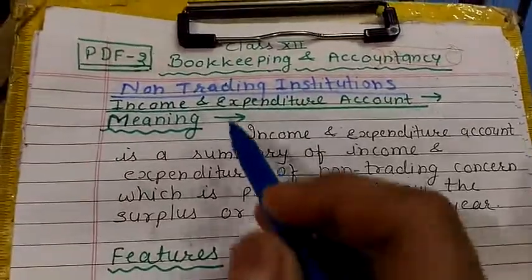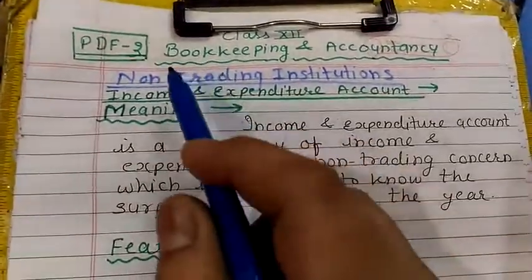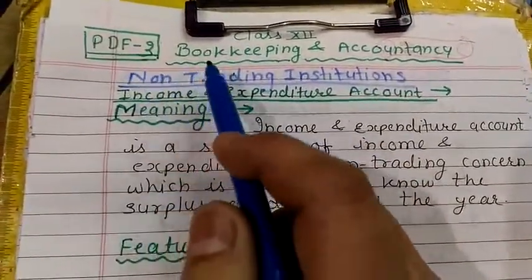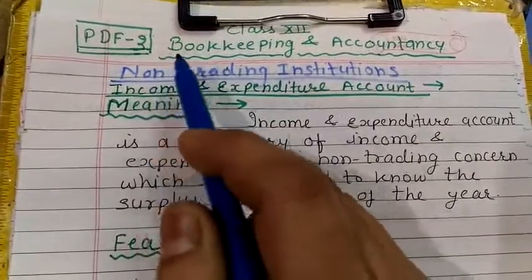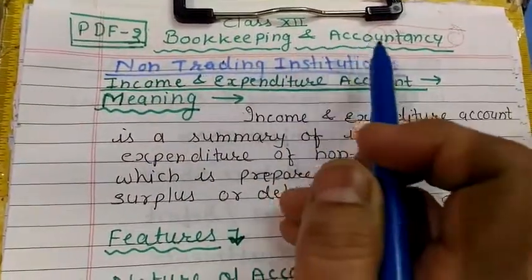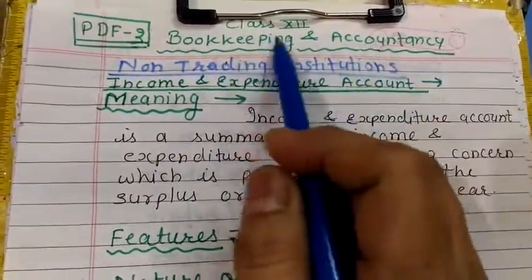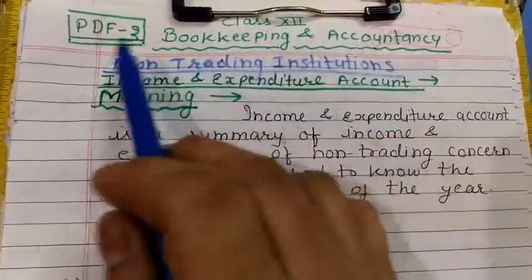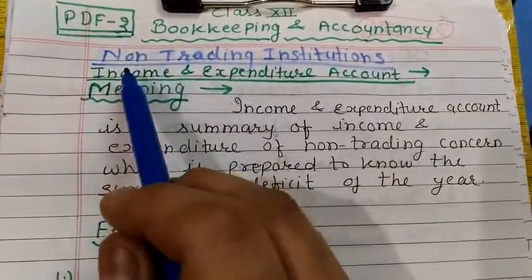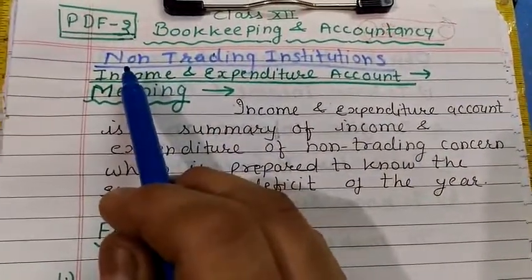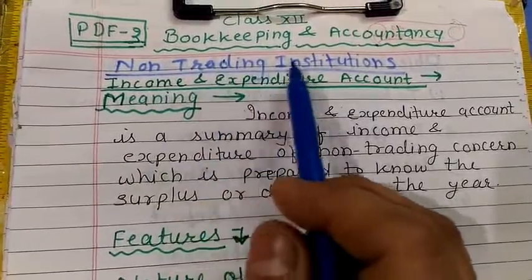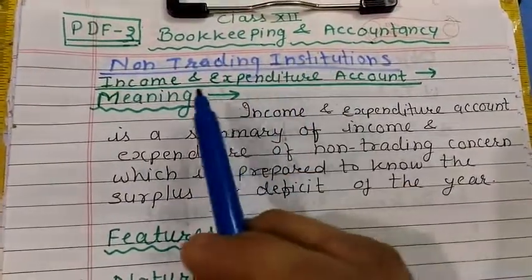Hello everyone, today I am going to explain Bookkeeping and Accountancy Class 12, PDF number 2, which is related to our Chapter 1: Non-Trading Institutions.